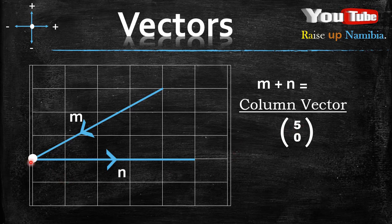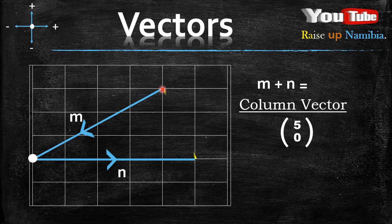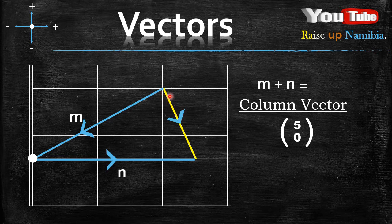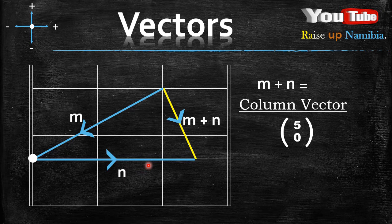Because if you use this column vector and you use the head of M as the starting point, on the x-axis it will be positive five. So you'll be moving to the right: one, two, three, four, five. And then on the y-axis, because it's zero, you won't move. Now, after you join these two vectors, you go here and then you draw your line. After drawing your line, remember, M is your starting point. So, you draw your arrow from there and then that vector that is formed is M plus N. This vector going towards this side is M and then added to it is another vector N. The vector formed by adding these two vectors is M plus N.